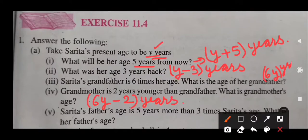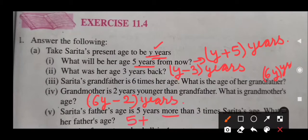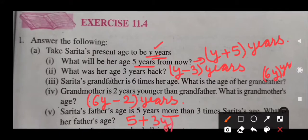Now next is the 5th part. Sarita's father's age is 5 years more than 3 times Sarita's age. 5 years more means we have to add 5. More means we are going to add. Sarita's age is Y, so 3 times of Y means 3Y. So father's age comes out to be 5 plus 3Y, or you can write 3Y plus 5 — one and the same thing. So the answer is 3Y plus 5 years.